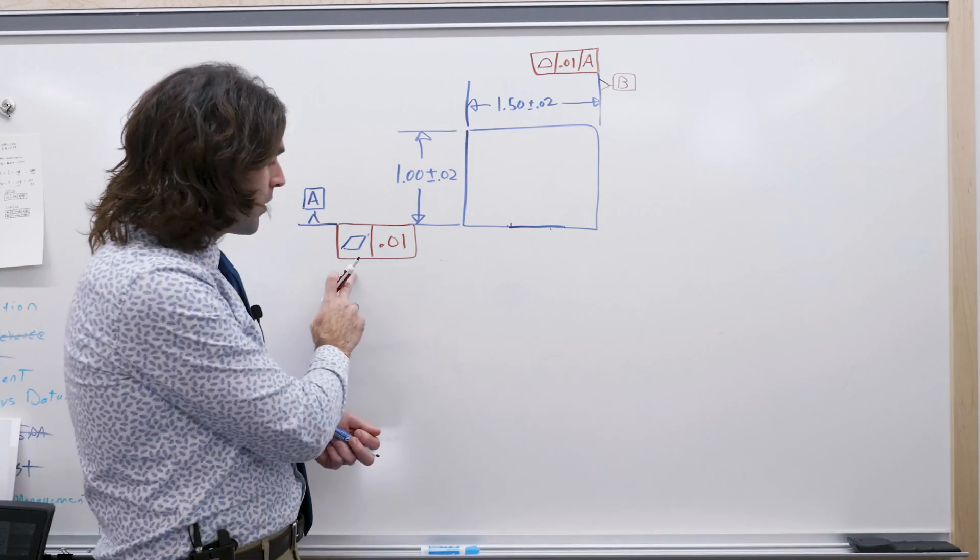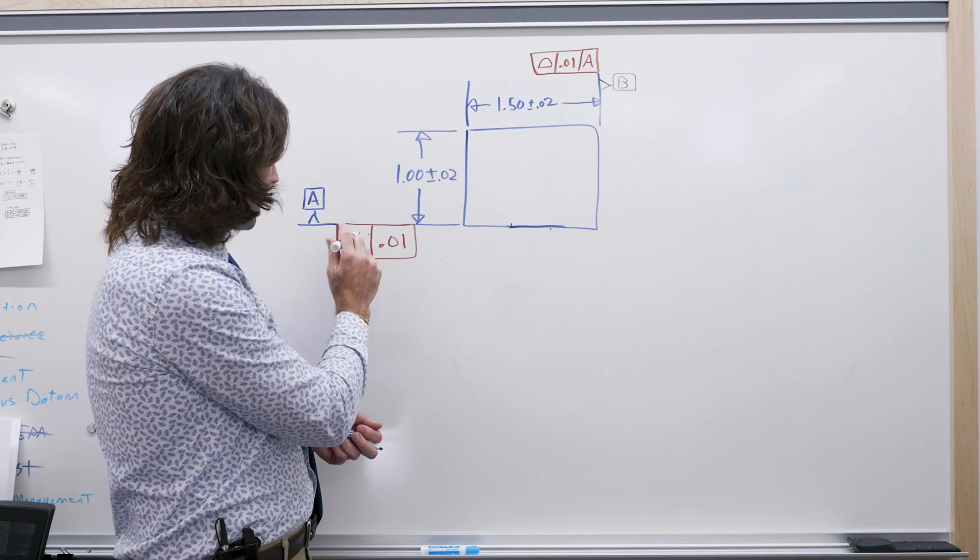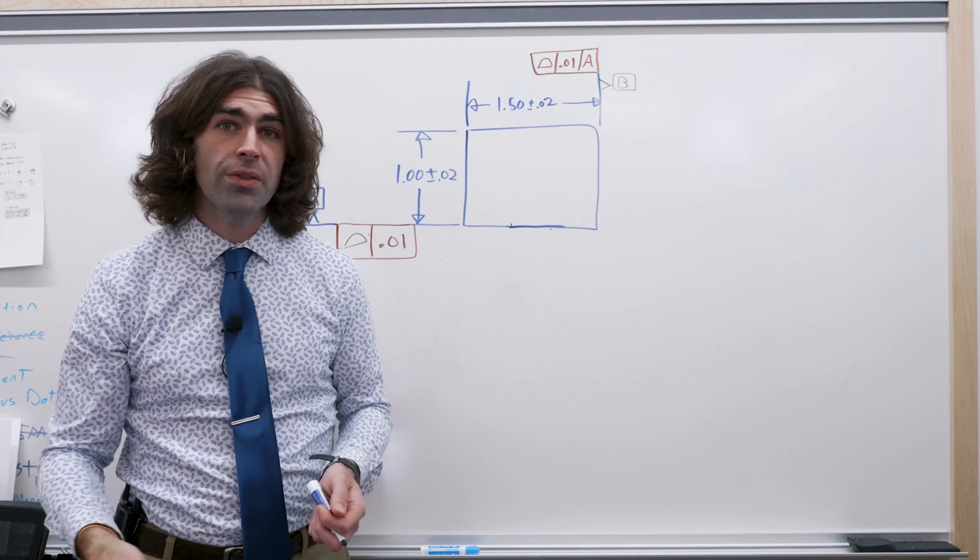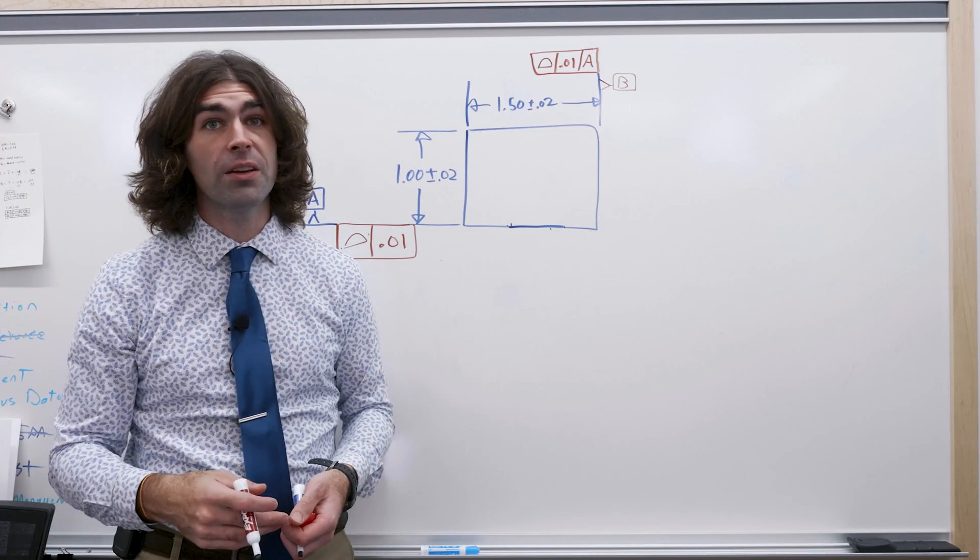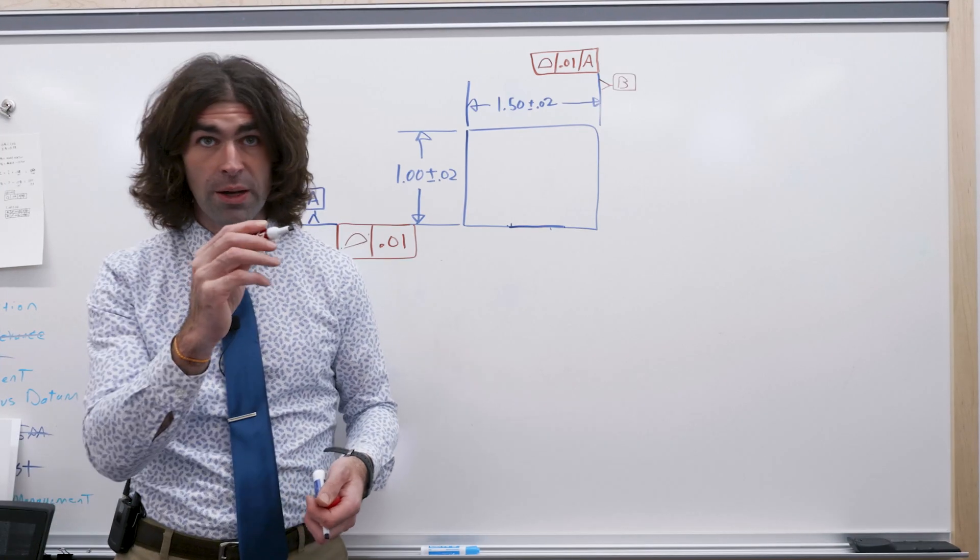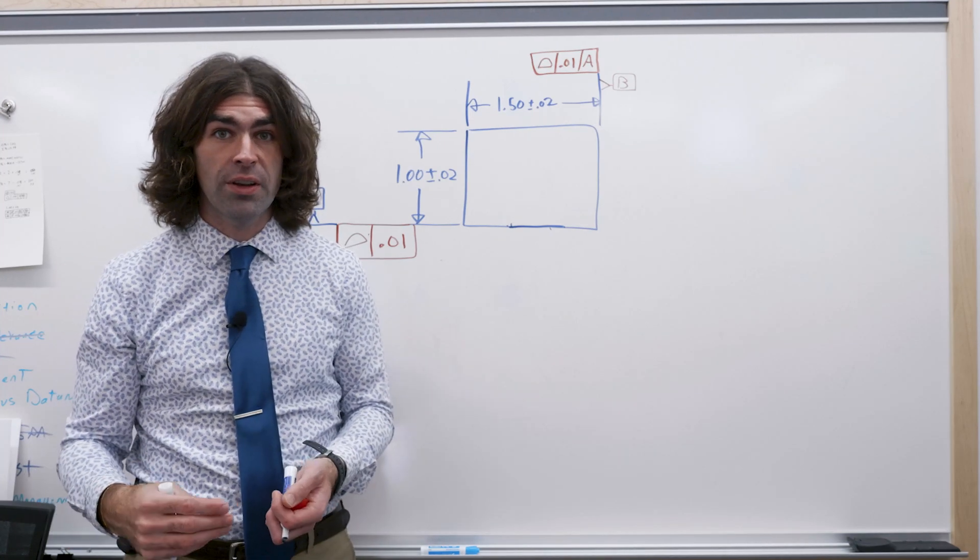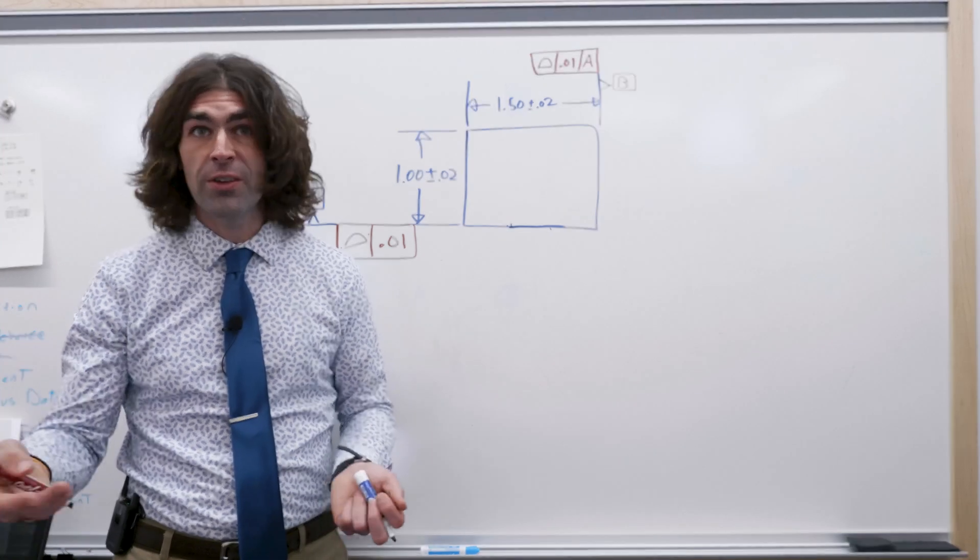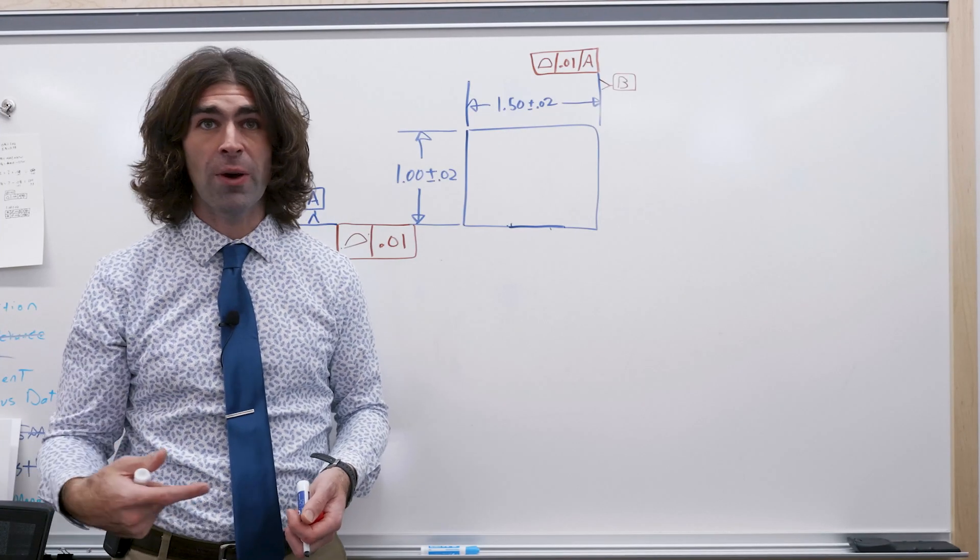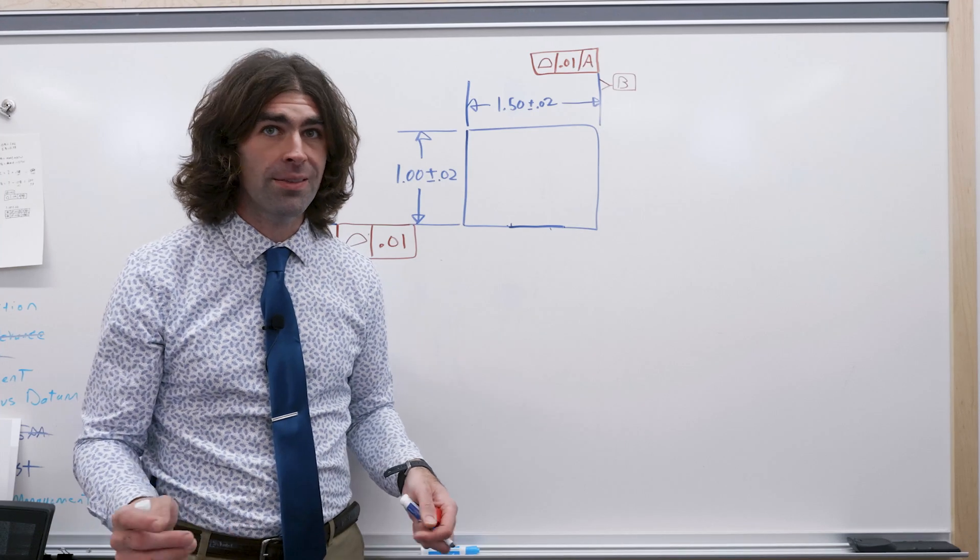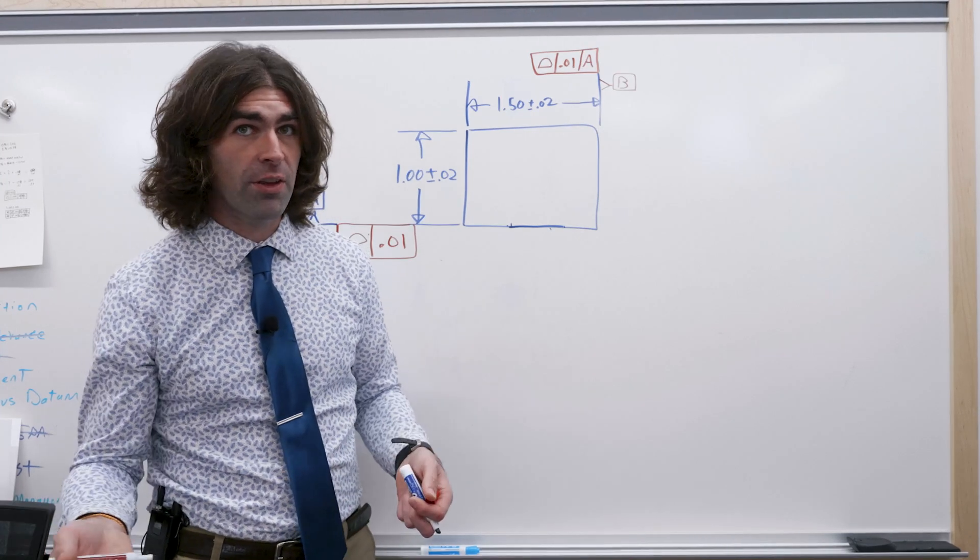The key to understanding profile is looking out for those datum references. If it has no datum references, it can really only control form, so usually flatness, but it could also be a curved surface. It is allowed to use a non-flat, curved, mathematically defined surface as a primary datum in ASME Y14.5, and you can do that pretty easily on CMM machines. A little bit more difficult to hard gauge though.